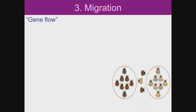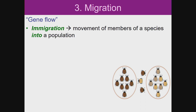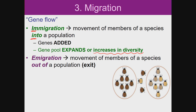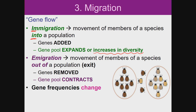Migration can also be called gene flow because when individuals move, their genes go with them. Immigration is the movement of members of a species into a population — genes are added, so the gene pool expands and increases in diversity. Emigration is the movement of members out of a population — genes are removed, so the gene pool contracts and decreases in diversity. In both cases, gene frequencies change, and diversity decreases as a result of the gene pool contracting.